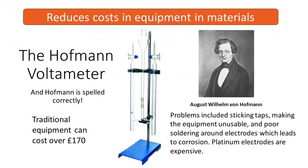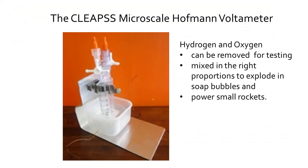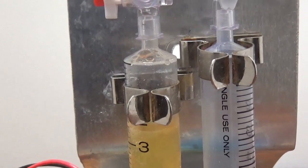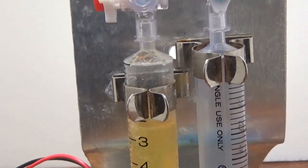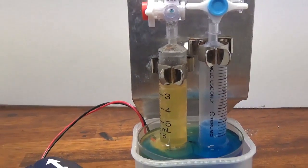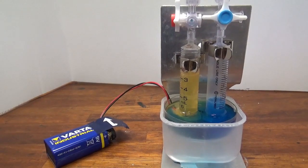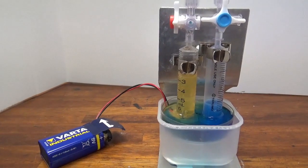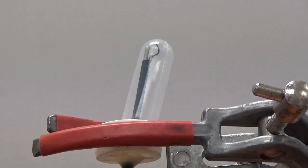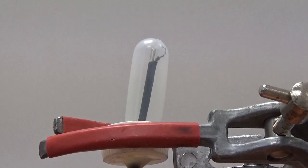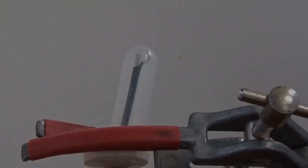Some of the equipment in our schools is very expensive and if it breaks it is not easy to replace it as the budget might be quite low. This Hickman voltmeter costs over £170. Problems can include sticking taps and the electrodes coming off. So we developed a microscale Hickman voltmeter. This uses two syringes and the electrodes are still platted wire through a petri dish. The gases can be removed using the three-way taps at the top. The electrolyte is sodium sulphate solution, so that is quite safe and much safer than the one molar sulphuric acid used in the traditional equipment. You can take the gases off, test them, and you can make little rockets of them. But if you put custard as the base of the rocket then it fires really quite well.